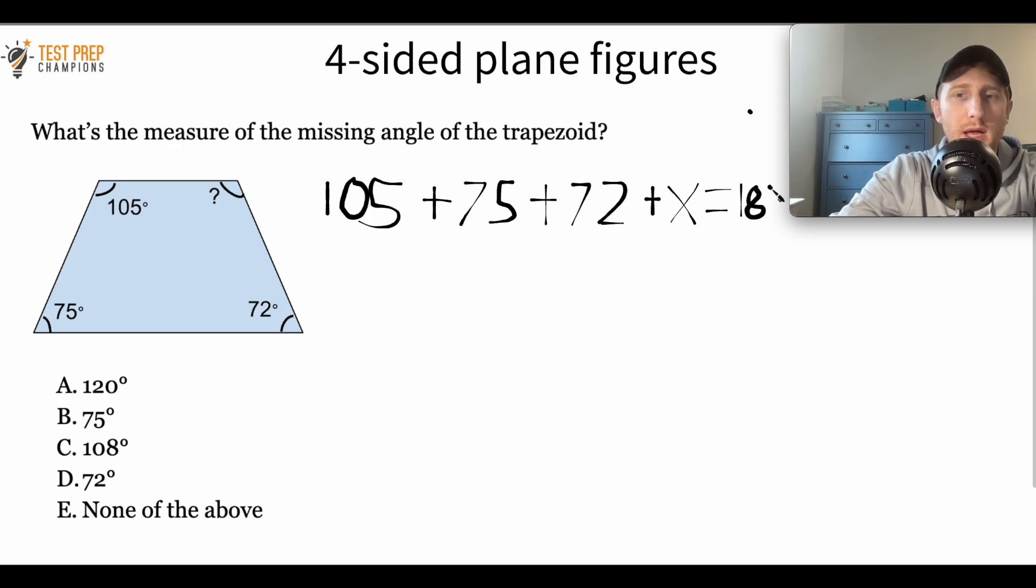And the reason that I'm putting X here is to represent the unknown side. Now, you could have put A, B, C, D, Z, Y, whatever you wanted here instead of X. I'm just putting an X here just because that's just what I picked.